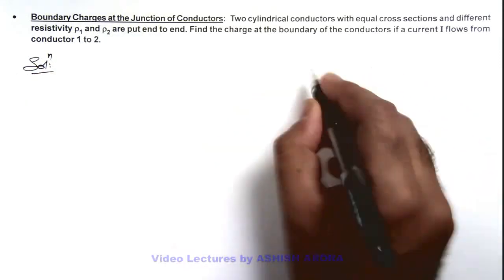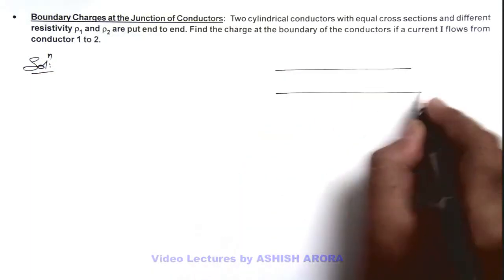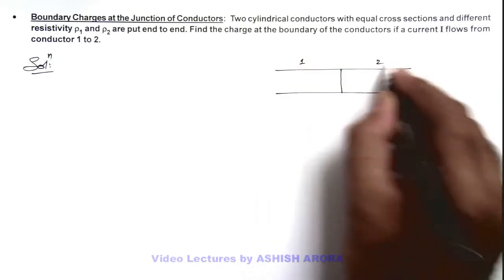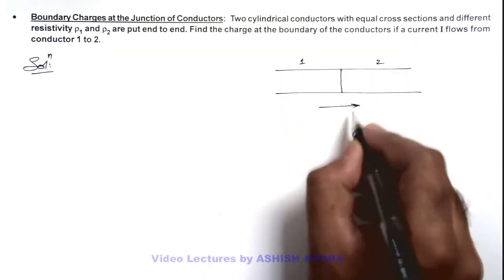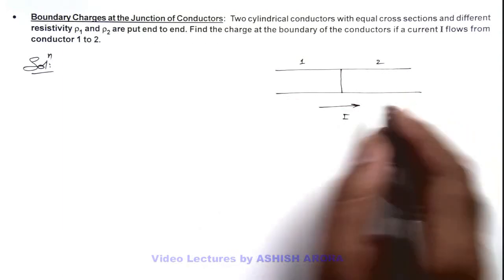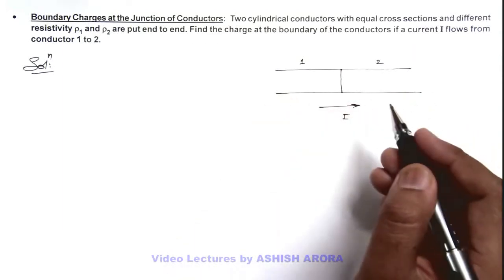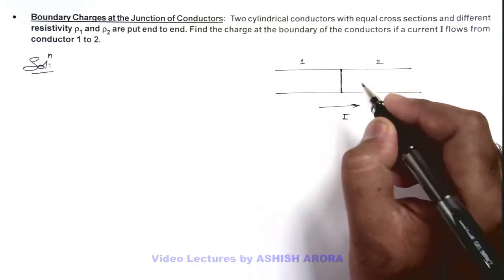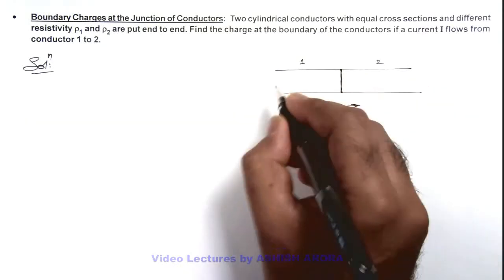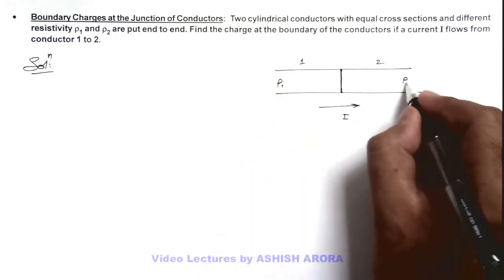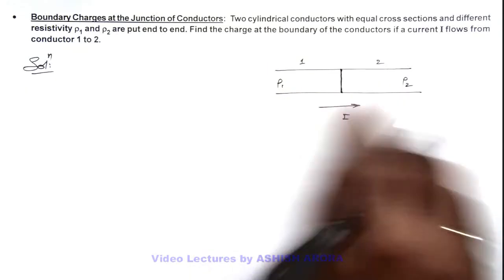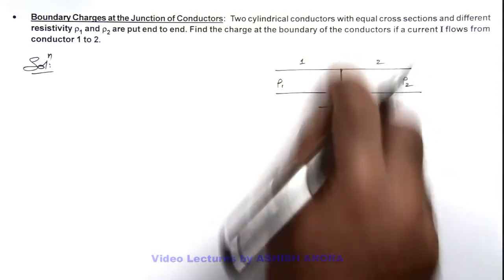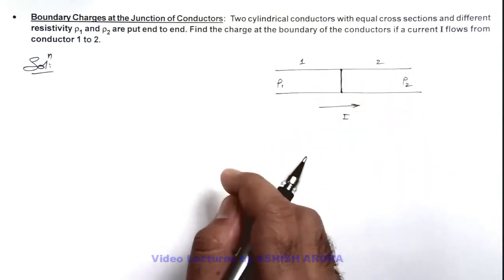If I draw the situation, you can see these are two conductors which are joined end to end, labeled 1 and 2. A current i is flowing through the two conductors. As they are in series, the current remains the same. Here we are required to find the charges appearing at the boundary. Due to the difference in resistivity, some charges will be collected or accumulated here at the junction.